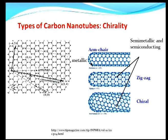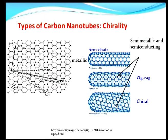Remarkably, carbon nanotubes of the armchair configuration are metallic in character, whereas the other two configurations — zigzag and chiral — are semiconducting in character. If one produces single-walled carbon nanotubes, about one third of them would be of the armchair configuration and therefore metallic, and the rest would be semiconducting on the average. This is a remarkable property — carbon nanotubes can be of both metallic and semiconducting types depending on how they are folded.